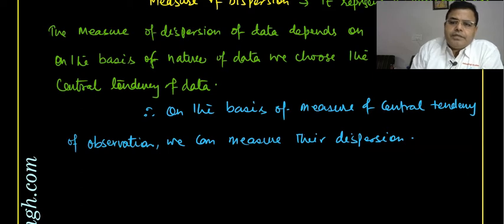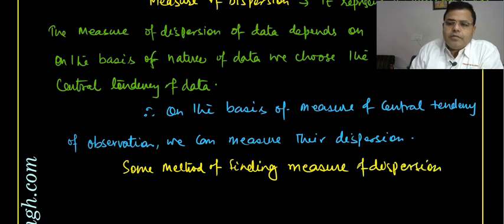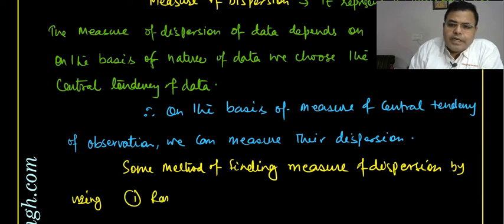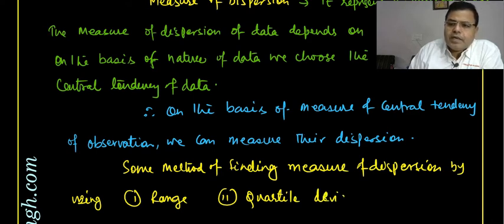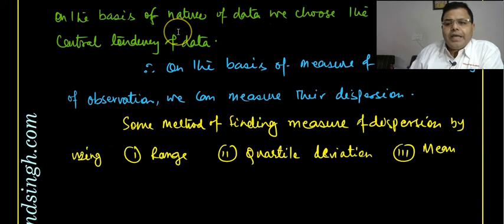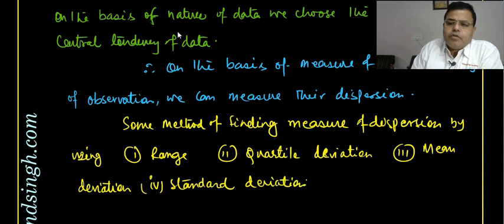Some methods for finding the measure of dispersion are: first, Range; second, Quartile Deviation; third, Mean Deviation; and fourth, Standard Deviation. We will discuss all of them. First of all, we are going to find out how dispersion or scattering can be measured by the help of Range.